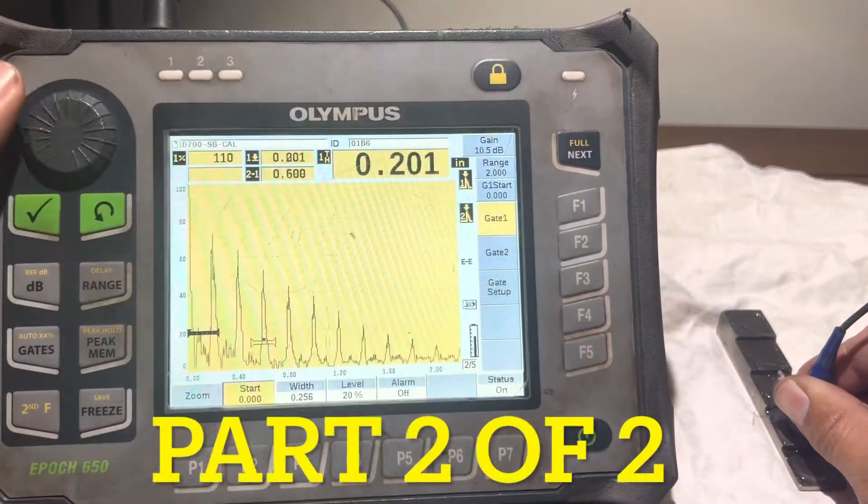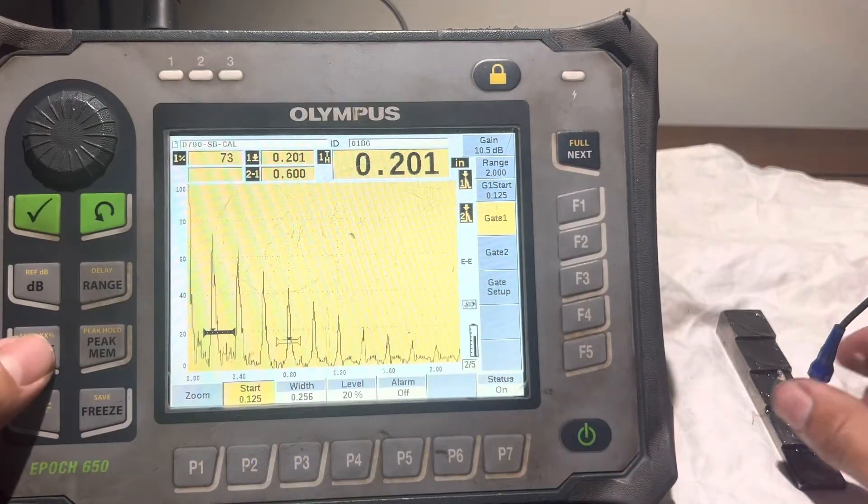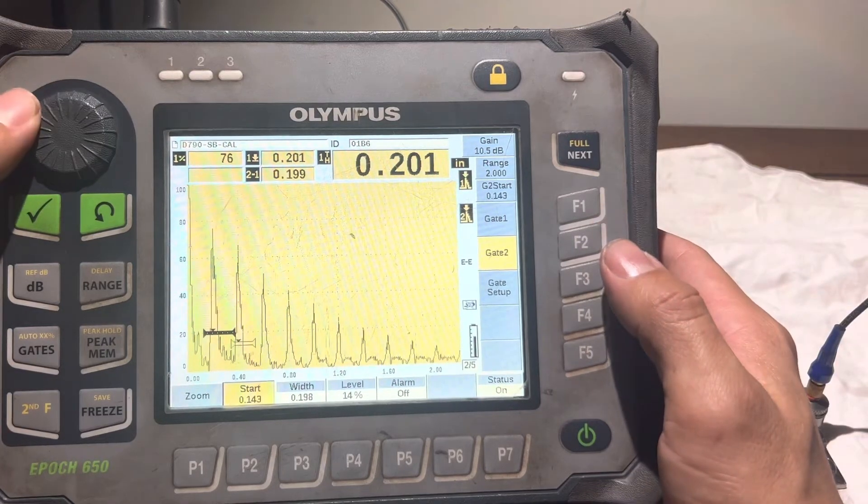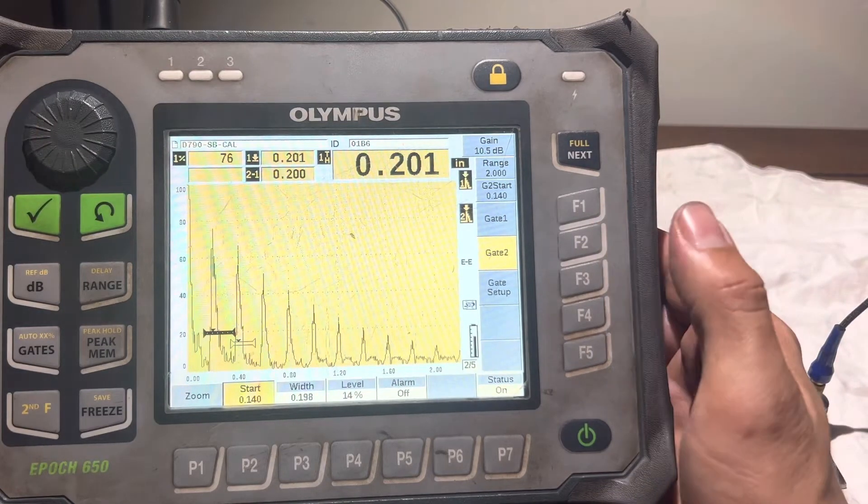In this part 2 video I'm going to be demonstrating how to calibrate a single element using a standoff with an Olympus 650 and a carbon steel cal block.